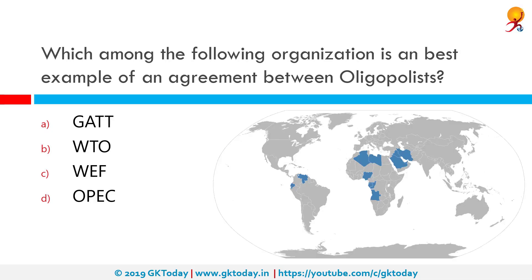Which among the following organizations is the best example of an agreement between oligopolies? The correct answer is OPEC. The Organization of the Petroleum Exporting Countries is an intergovernmental organization of 12 oil-producing countries: Algeria, Angola, Ecuador, Iran, Iraq, Kuwait, Libya, Nigeria, Qatar, Saudi Arabia, the United Arab Emirates, and Venezuela.